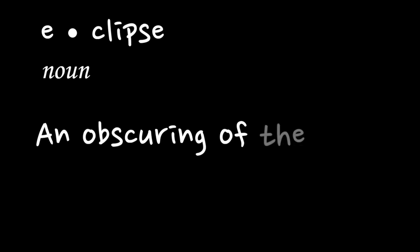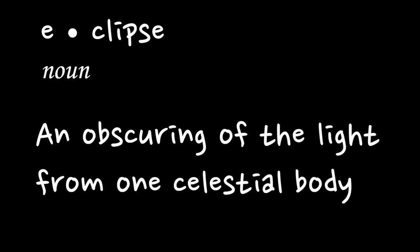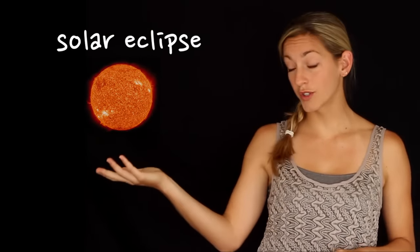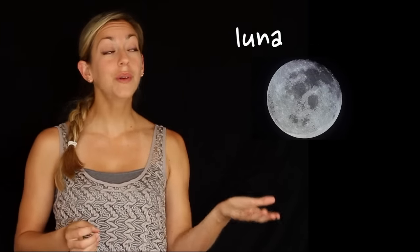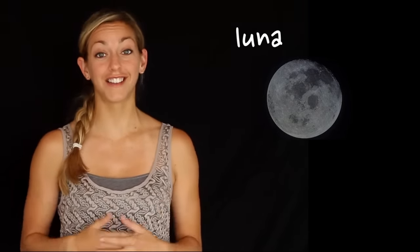Here are three different ways to remember which is which. Some of the confusion probably comes from not knowing exactly what the word eclipse means. It's an obscuring of the light from one celestial body. So the name of the eclipse tells you which one is getting darker. In a solar eclipse, the Sun — or 'sol' in Latin — gets darker. In a lunar eclipse, the moon — or 'luna' in Latin — gets darker. Solar eclipse: Sun is eclipsed. Lunar eclipse: moon is eclipsed. Easy.